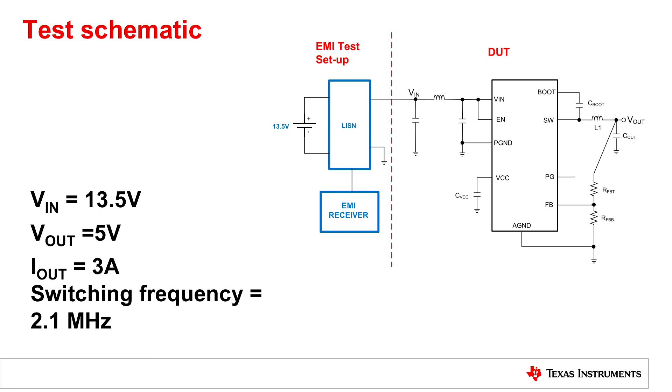Today we'll be taking a look at a very typical automotive application. 13.5 volts in, 5 volts out, 3 amps of load current, and a switching frequency of 2.1 megahertz.